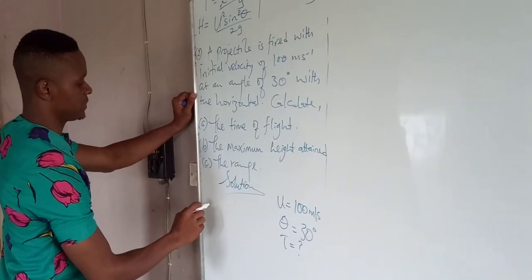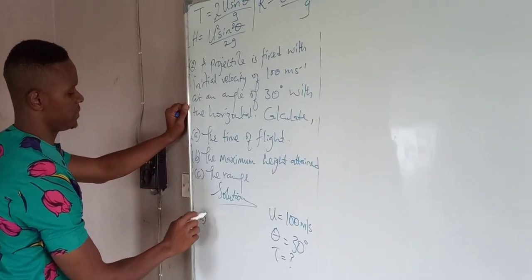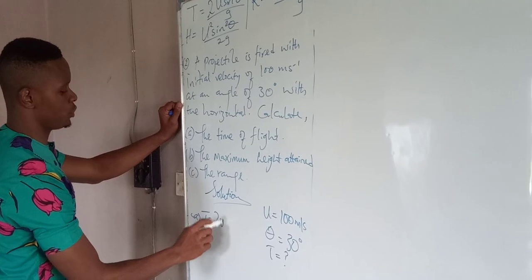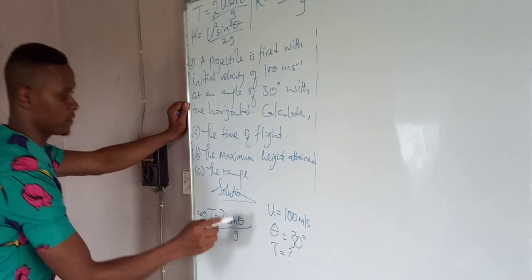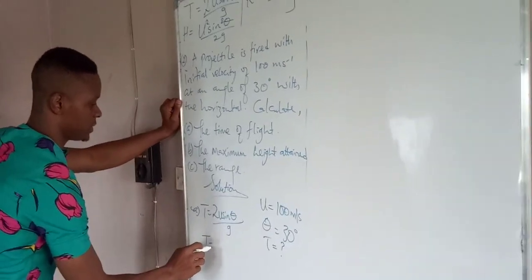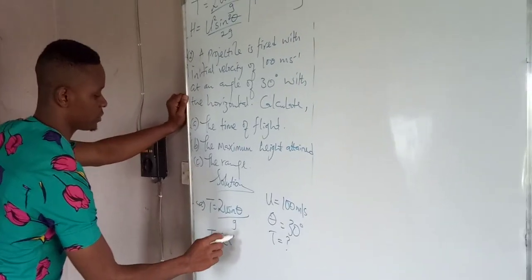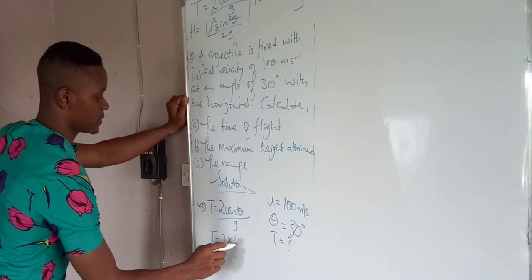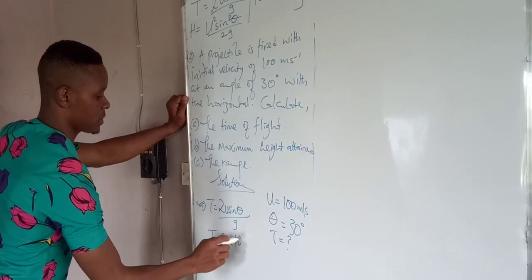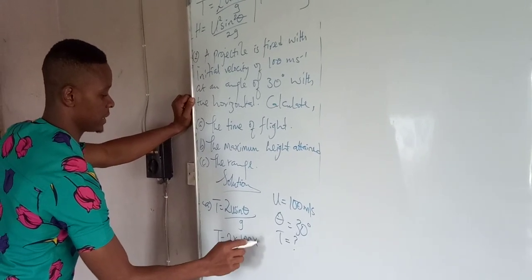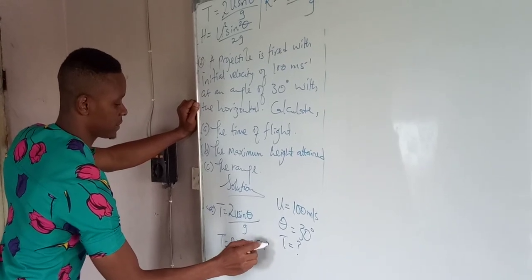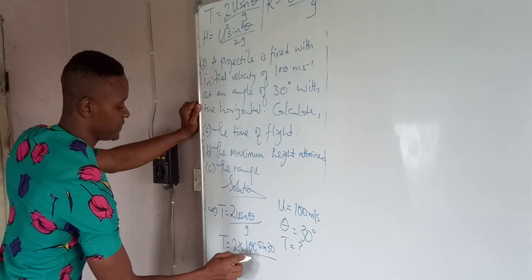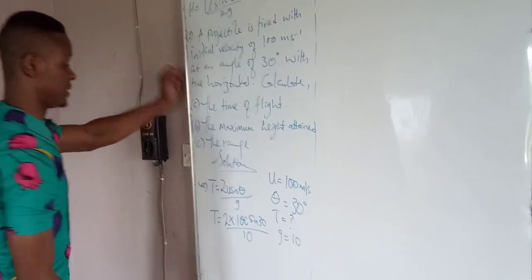We take it that t is 2u sin theta over g. Substitute the values: t becomes 2 times 100 times sin theta over 10. Our g is 10.